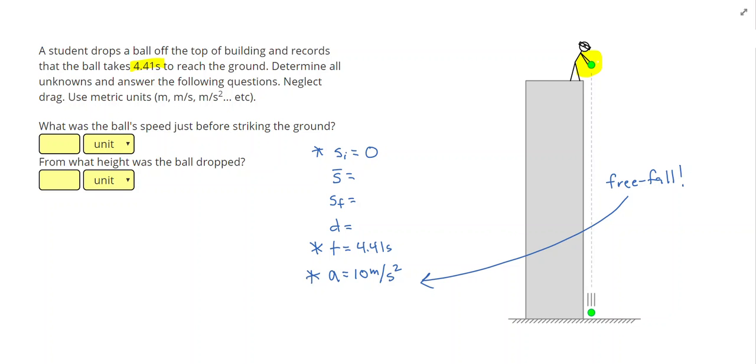So the ball is speeding up by 10 meters per second each second for 4.41 seconds. So I can do the final speed will be my initial speed of zero plus the acceleration times the time. So that would give me 44.1 meters per second as my final speed.